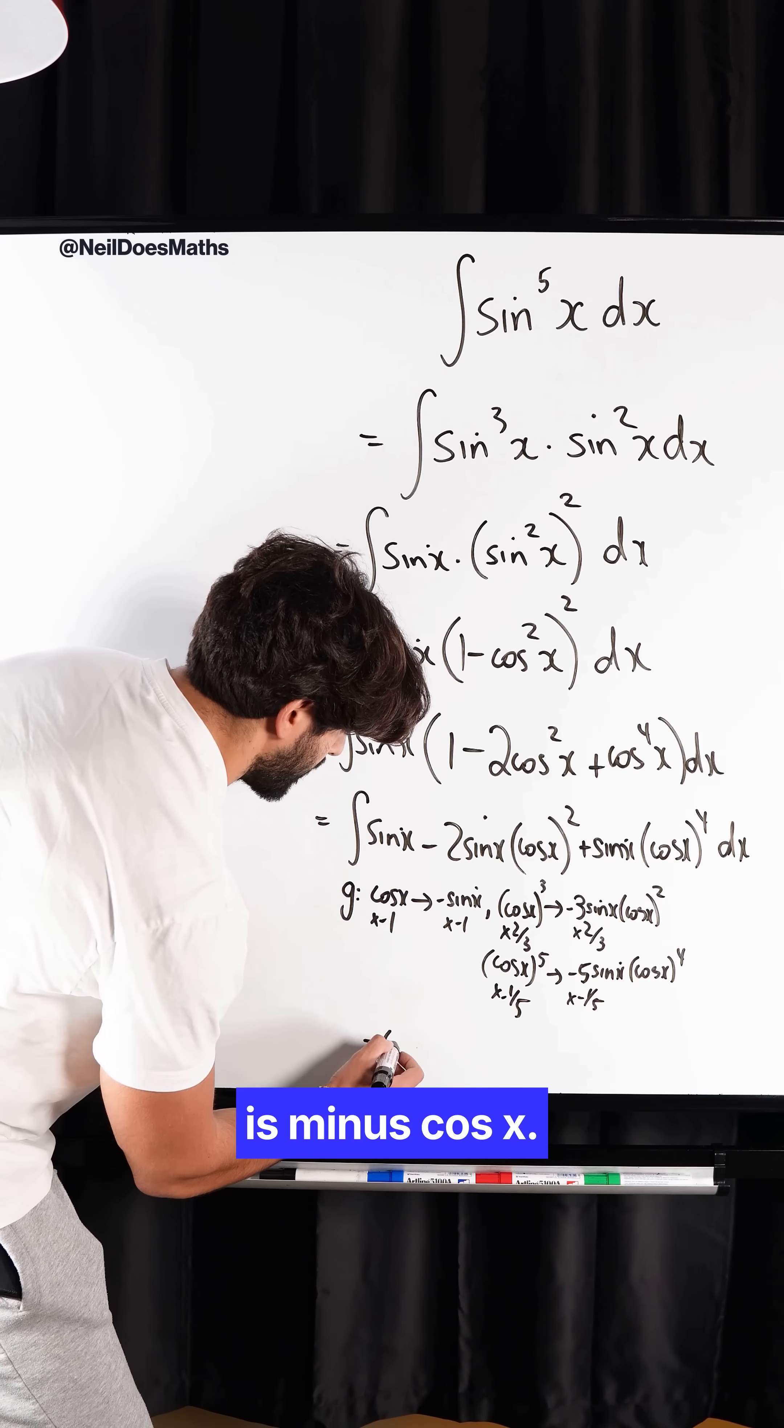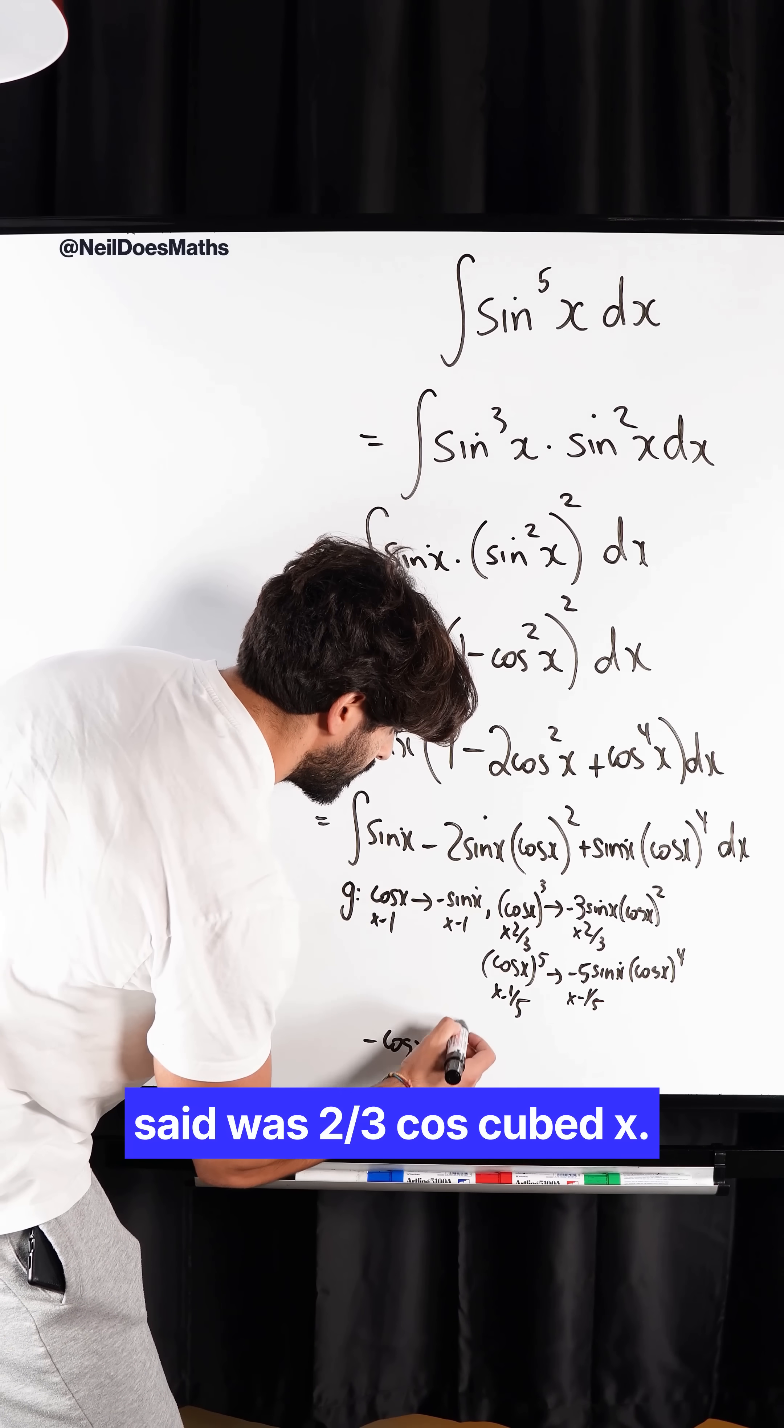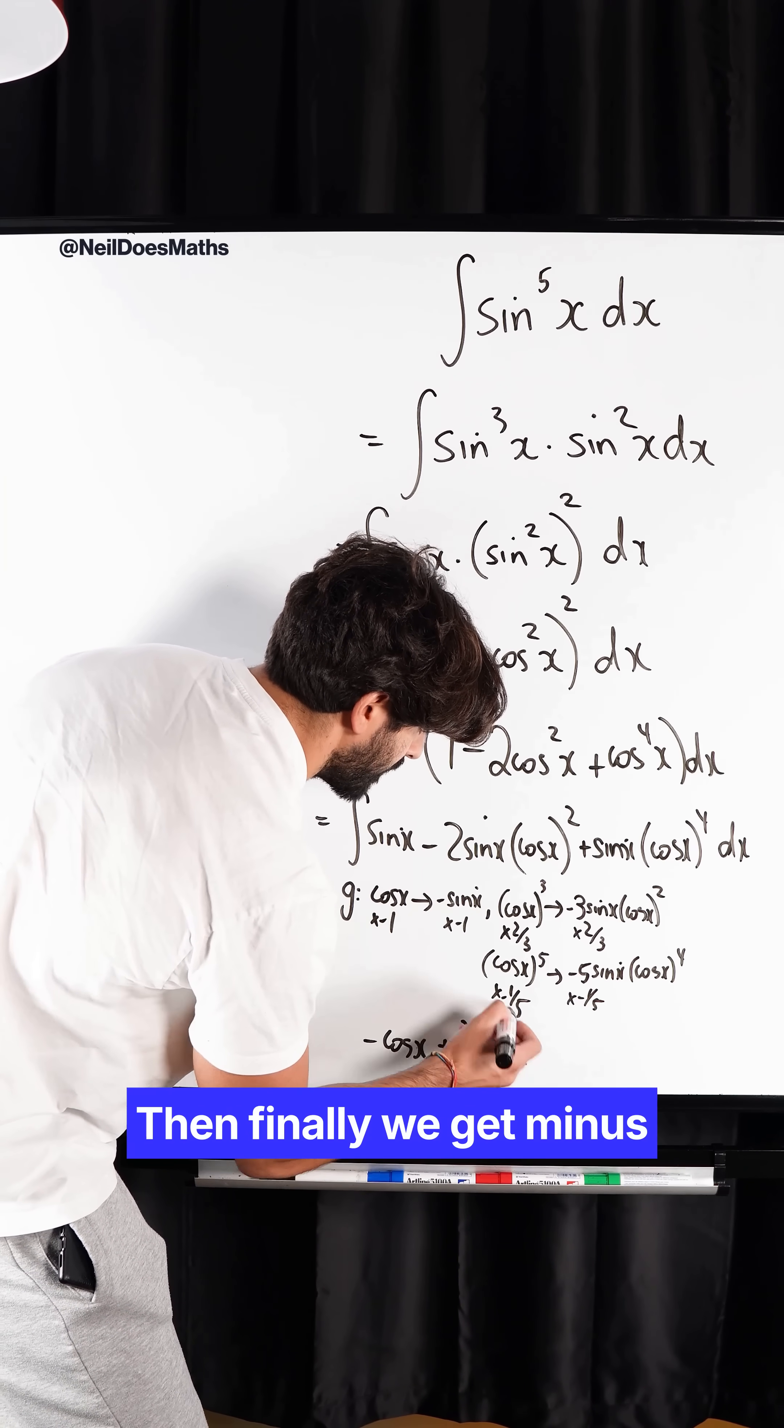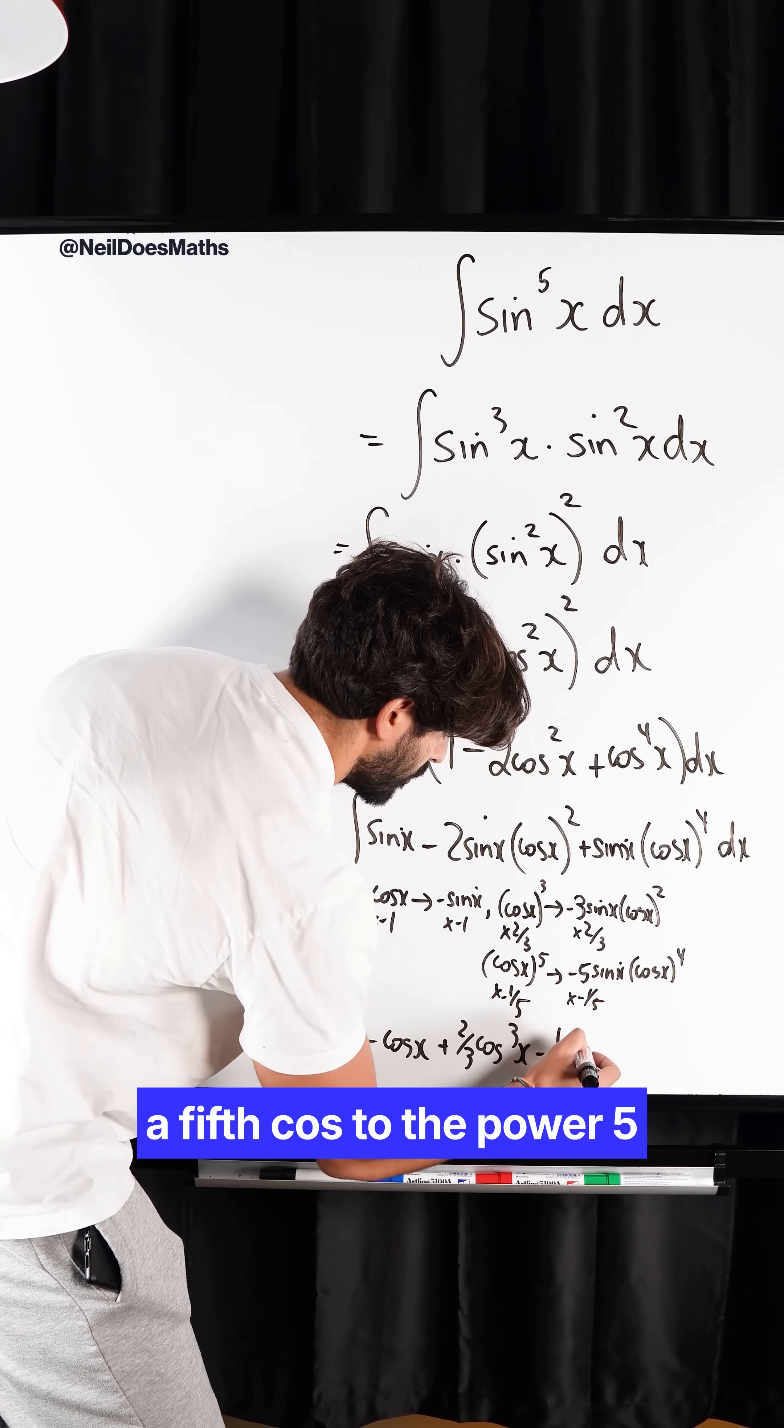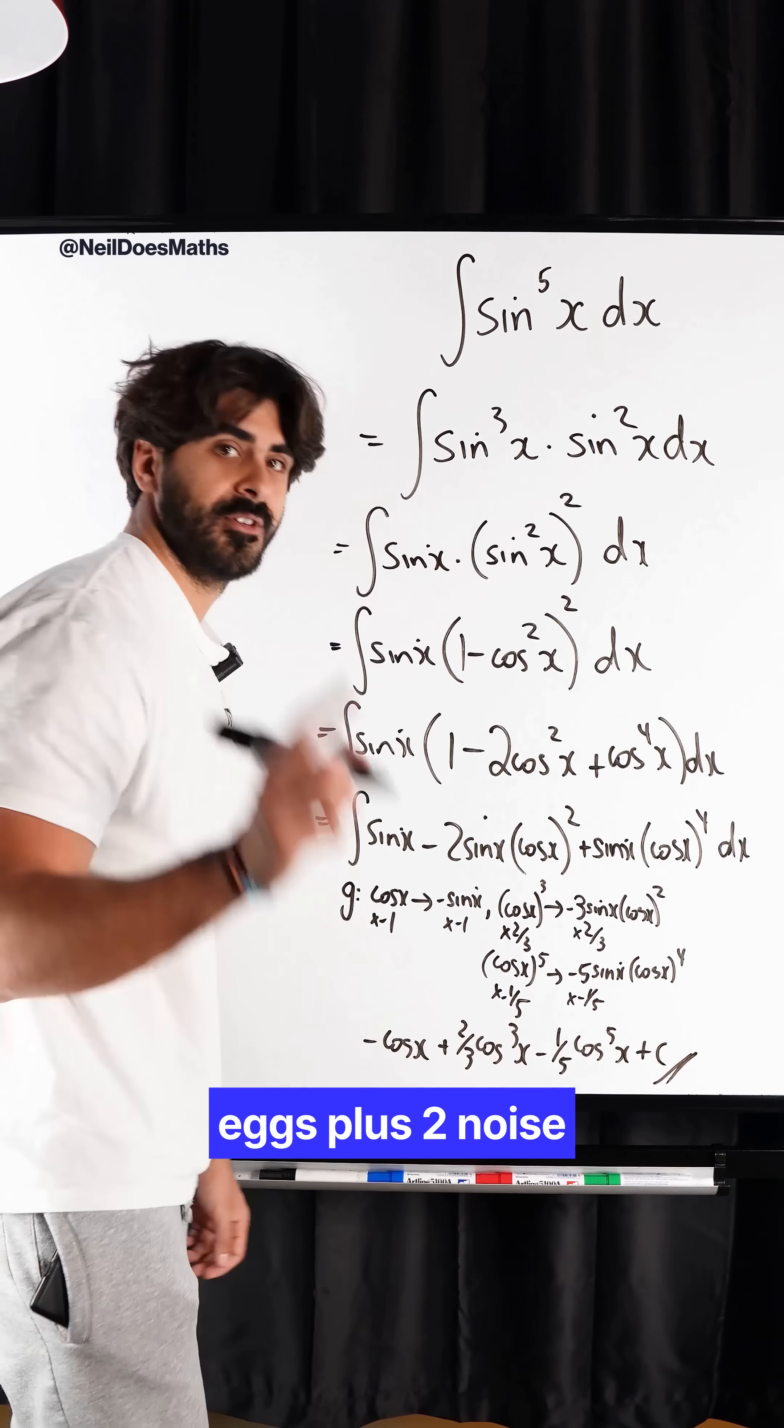So we're left with the integral of that is minus cos x. The integral of this we said was 2 thirds cos cubed x. And finally, we get minus a fifth cos to the power 5 x plus c.